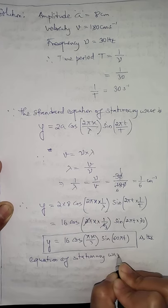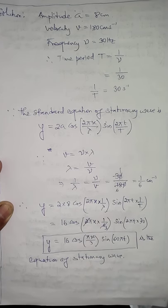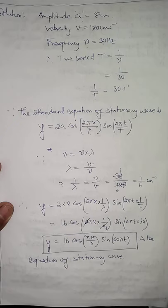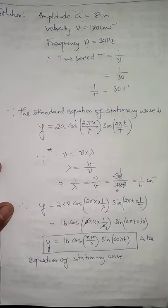With this numerical, we have completed the chapter on superposition of wave number 2. The next chapter, which is the last under unit number 10 — vibration and stressed strings — will be done from the next class. Thank you so much.